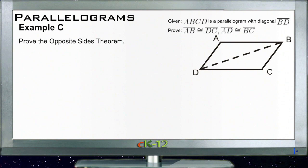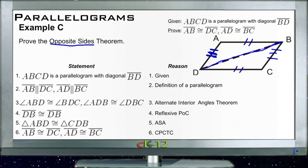Example C asks us to prove the opposite sides theorem. The opposite sides theorem tells us that in a parallelogram, the sides that are opposite each other are congruent. And we're told that ABCD is a parallelogram, and that BD here is the diagonal. And we need to prove that AB is congruent to DC, and that AD is congruent to BC. So we want to prove this statement here, that these sides actually are congruent the way I have them marked. So let's take a look at the steps of the proof.